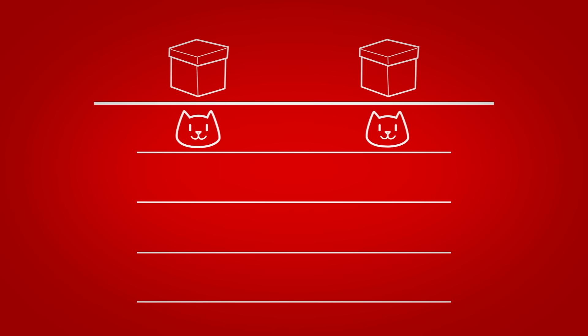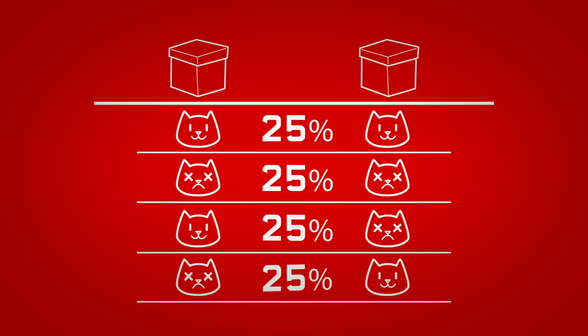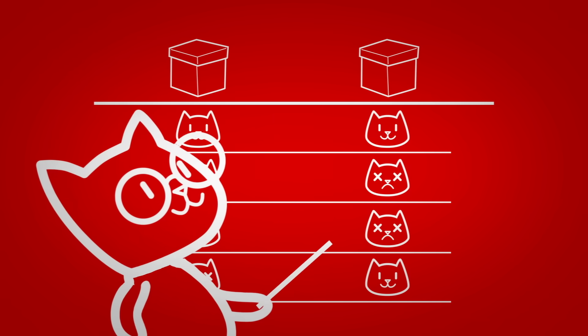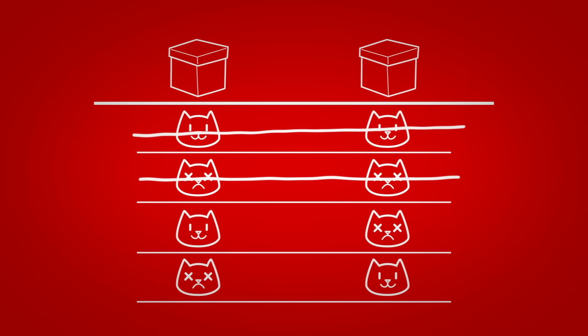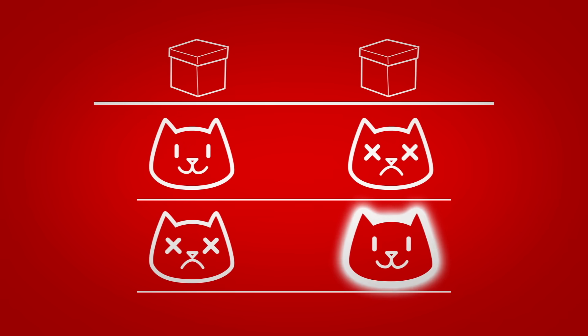This brings us to the strange and beautiful phenomenon of quantum entanglement. Suppose that instead of one cat in a box, we have two cats in two different boxes. If we repeat the Schrödinger's cat experiment with this pair of cats, the outcome can be one of four possibilities: either both cats will be alive, or both will be dead, or one will be alive and the other dead, or vice versa. The system of both cats is again in a superposition state, with each outcome having a 25% chance. But here's the cool thing — quantum mechanics tells us it's possible to erase the 'both cats alive' and 'both cats dead' outcomes from the superposition state. In other words, there can be a two-cat system such that the outcome will always be one cat alive and the other cat dead. The technical term for this is that the states of the cats are entangled.